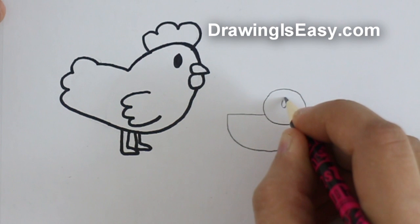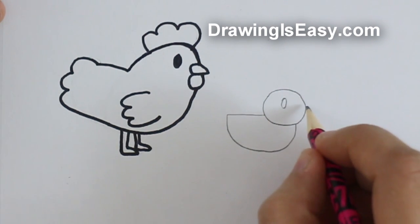We will now draw the eye about the same size as the eye for the chicken, and then make two small triangles.